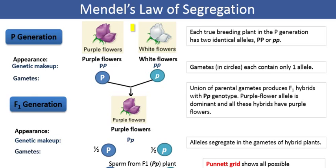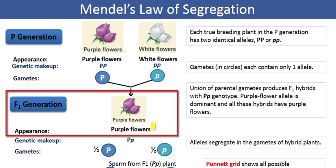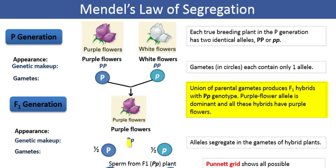Once we cross these two flowers, the first filial generation — F1 — are all purple, with a genotype that is a combination of the two pure breeding lines. That is a heterozygous genotype consisting of a dominant allele for purple color and a recessive allele for white color. All F1 hybrids will have purple flower color because the dominant allele is expressed, and they all carry a heterozygous genotype.